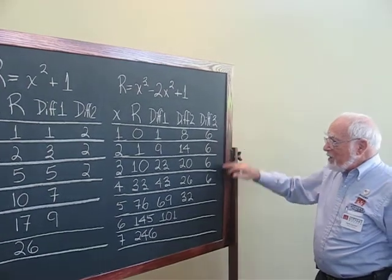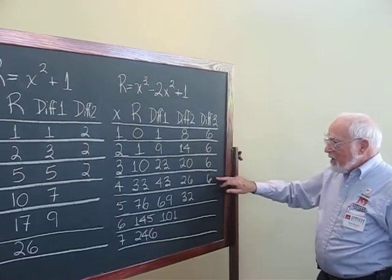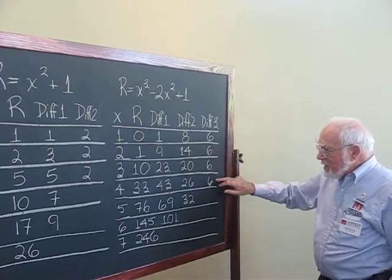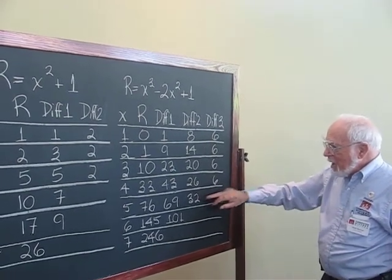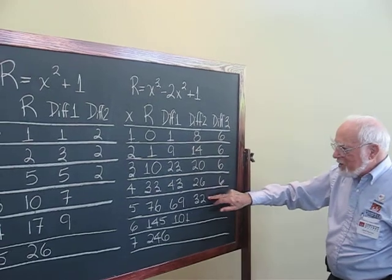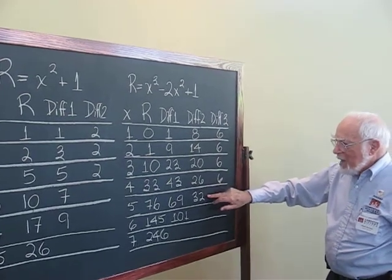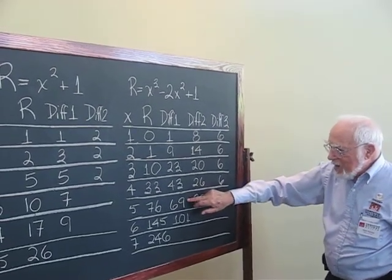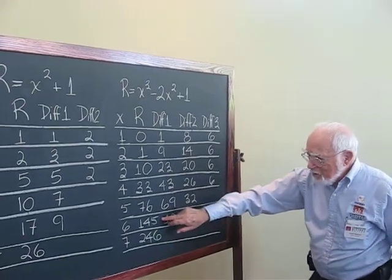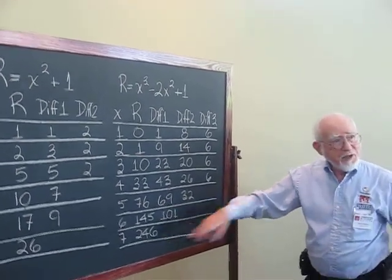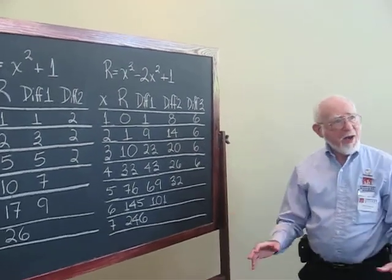Well, we've calculated down to this point. We can now just add. Add 6 to 32. I'm sorry. Add 6 to the 26 and you get 32. Add 32 to the 69 and you get 101. Add 101 to the 145 and you get 246. So you can continue like that forever just by adding.